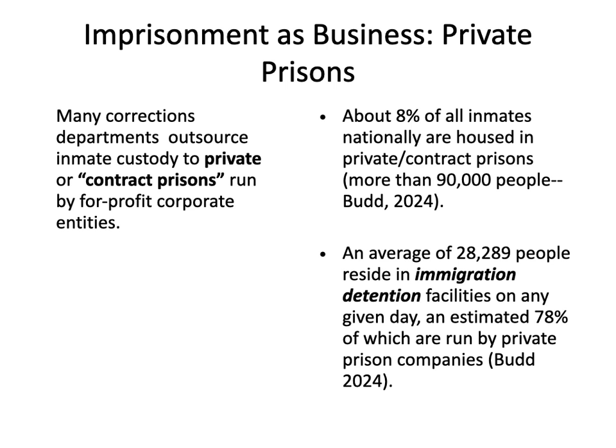The idea that locking people up can create revenue goes farther than just creating jobs. For-profit, corporate, or privately run prisons — sometimes also called contract prisons — are a pretty big business in the United States. Traditionally, jails and prisons as well as immigration detention facilities were run by state, local, or federal governments. But a for-profit prison is run by a corporation — same as Nike or Pepsi — and instead of making money by selling shoes or soda, they do it by locking people up and charging money to taxpayers to provide the service.